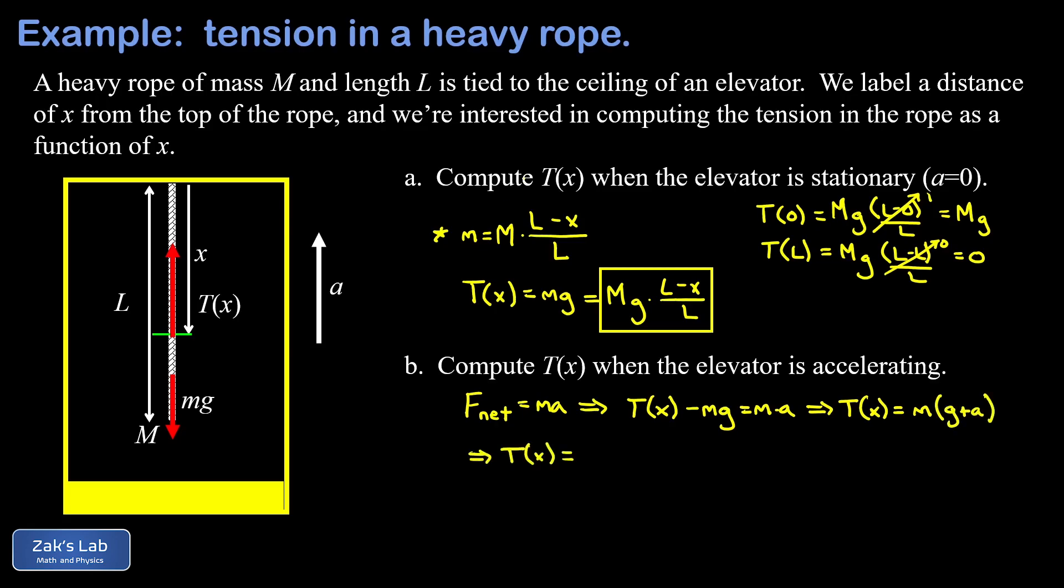Now all we have to do is replace little m with this expression in terms of the mass and length of the rope. And when I do this, I'm going to move the g plus a toward the front. So I have m times the quantity g plus a multiplied by l minus x divided by l.